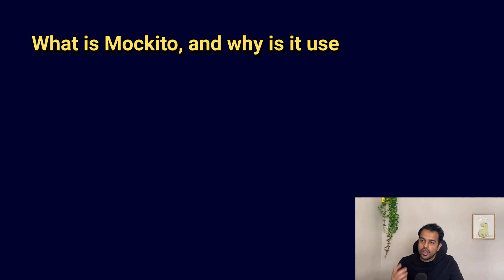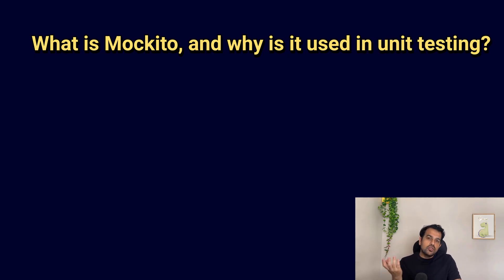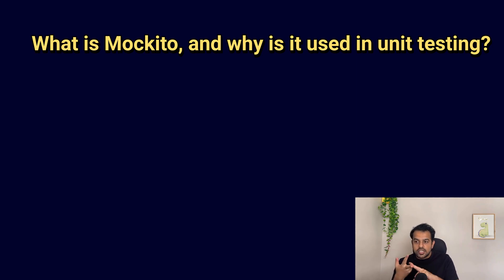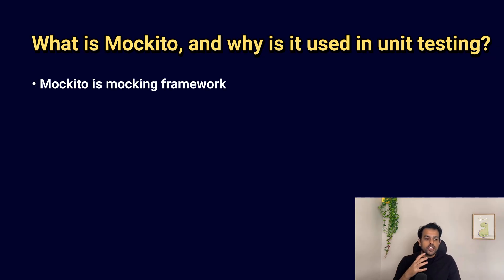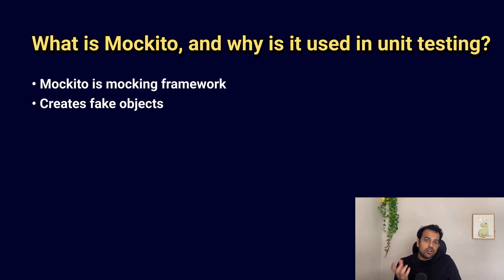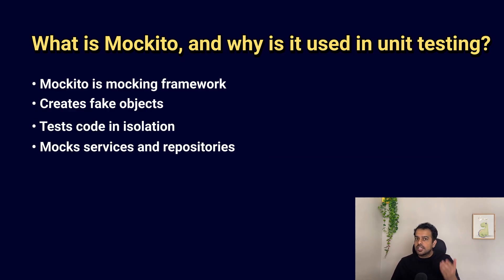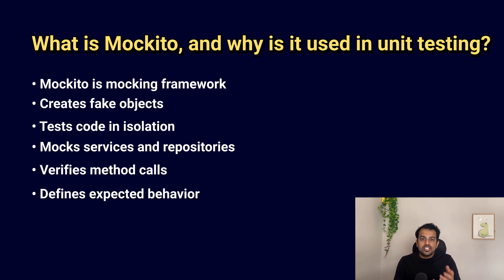The next question is: what is Mockito and why is it used in unit testing? Mockito is a mocking framework for Java. It helps you create fake objects so you can test your code in isolation — you can mock dependencies like services, repositories, and APIs. It also allows you to verify method calls and define expected behavior, making unit tests faster, simpler, and more reliable.